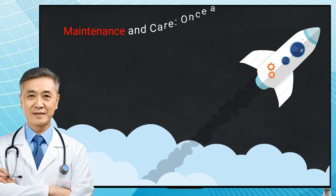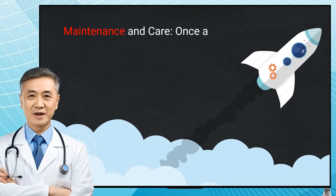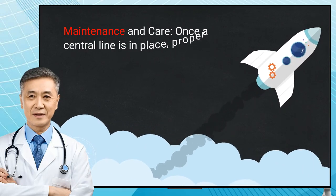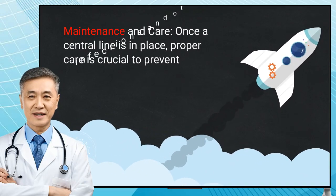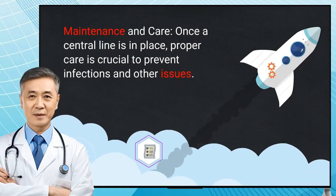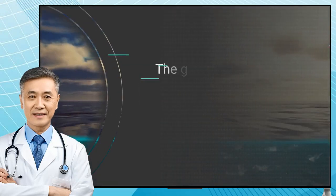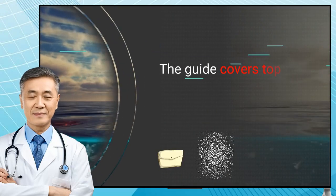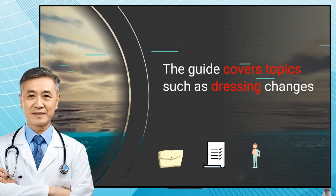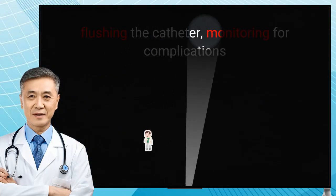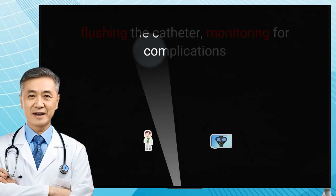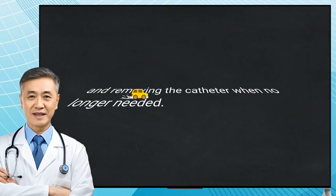Maintenance and care: once a central line is in place, proper care is crucial to prevent infections and other issues. The guide covers topics such as dressing changes, flushing the catheter, monitoring for complications, and removing the catheter when no longer needed.